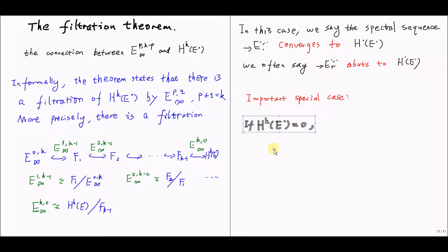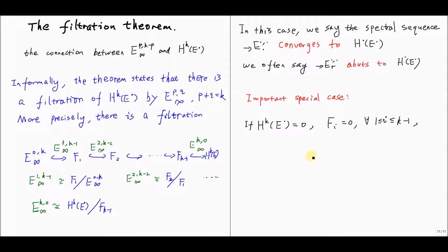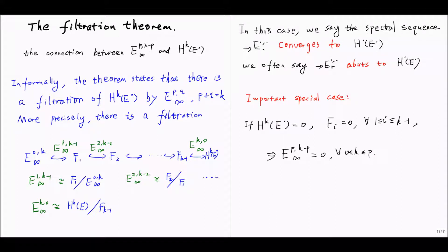Here's an important special case. If we somehow know that the k-th cohomology of the total complex is 0, then from this filtration theorem we will get each F_i equal to 0, for any i greater than or equal to 1 and less than or equal to k-1. Every F here will be 0. Since each stabilized object in the spectral sequence is either a sub-object of some F or a quotient of some F, we have each stabilized object in the spectral sequence equal to 0.